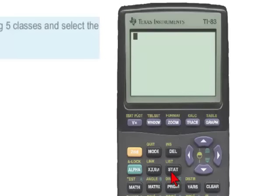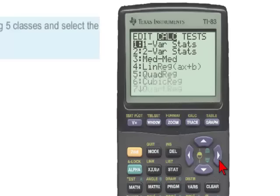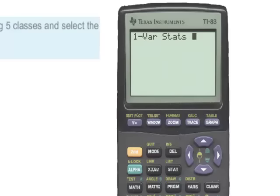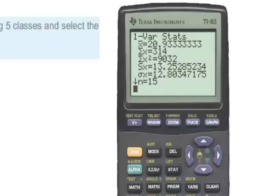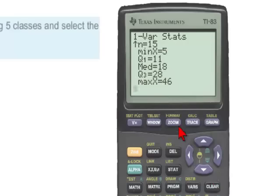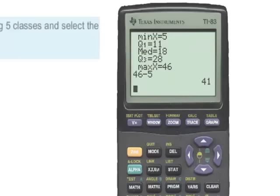we're going to go to the stat calculate menu and then select one variable statistics and ask for the one variable statistics for list 1. And again, we're specifically interested in the range because the range of the data, which is gotten by subtracting the maximum from the minimum. And now we'll take that range and divide by the number of classes,